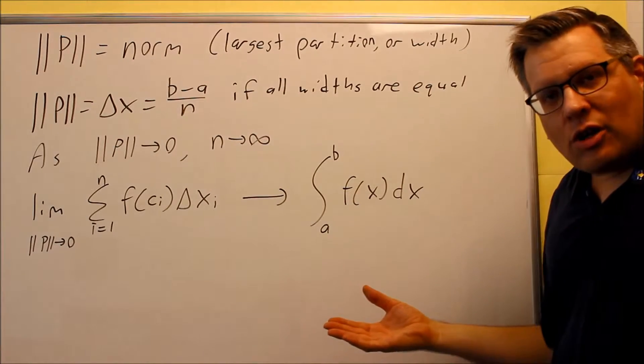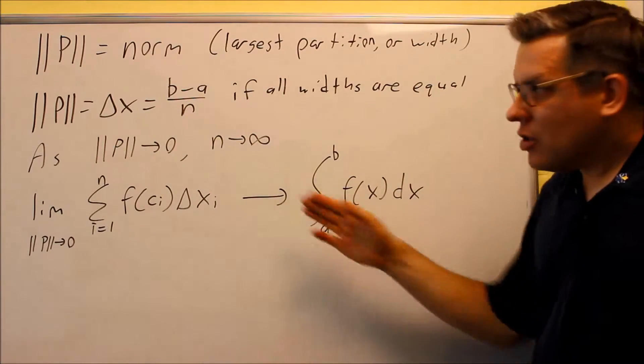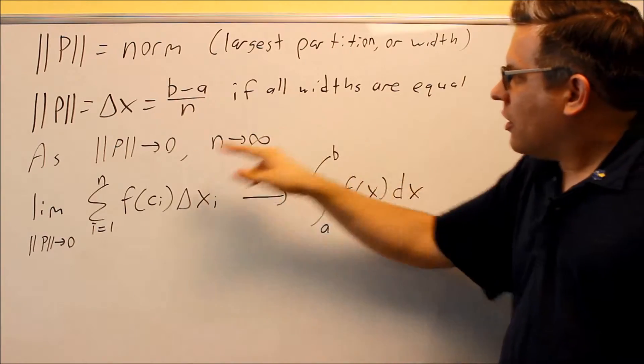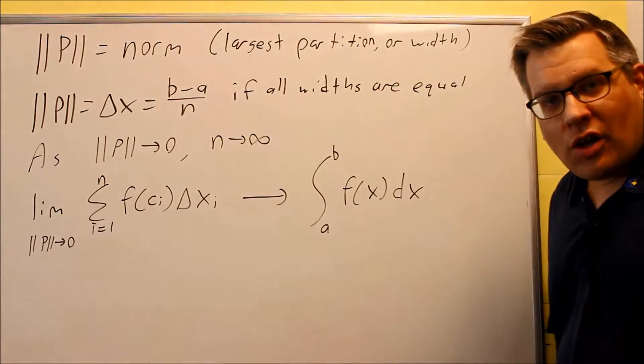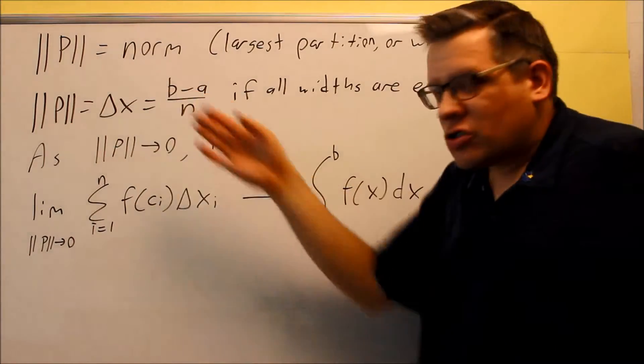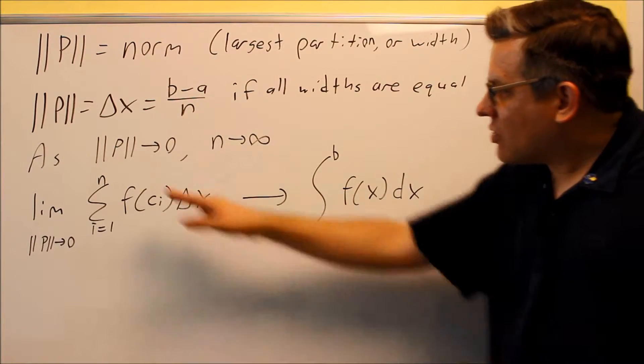So for what we're going to be considering here, we're going to consider all of our widths to be uniform, and so therefore we can say that the norm is exactly the same thing as delta x. Now if this is true, then we can make this statement here.